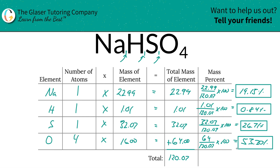What you can do to check yourself is simply add all the percentages up, and it should be equal to 100 percent. Depending on how you round it, it might not be exactly — it might be off by one hundredth — but you should be basically right there. That's it. Isn't that simple? Now you know how to find the mass percents of sodium, hydrogen, sulfur, and oxygen in sodium hydrogen sulfate. You can apply this process to any problem for percent composition. It's so nice and easy. Thanks so much for tuning in. Take care.